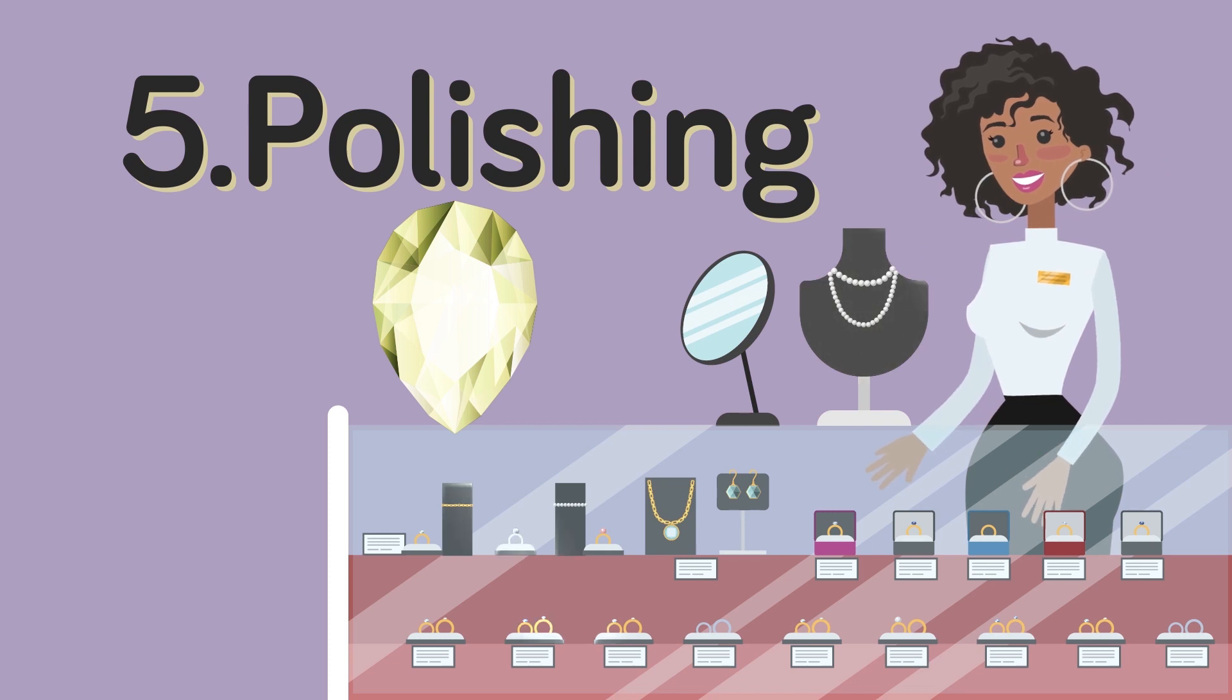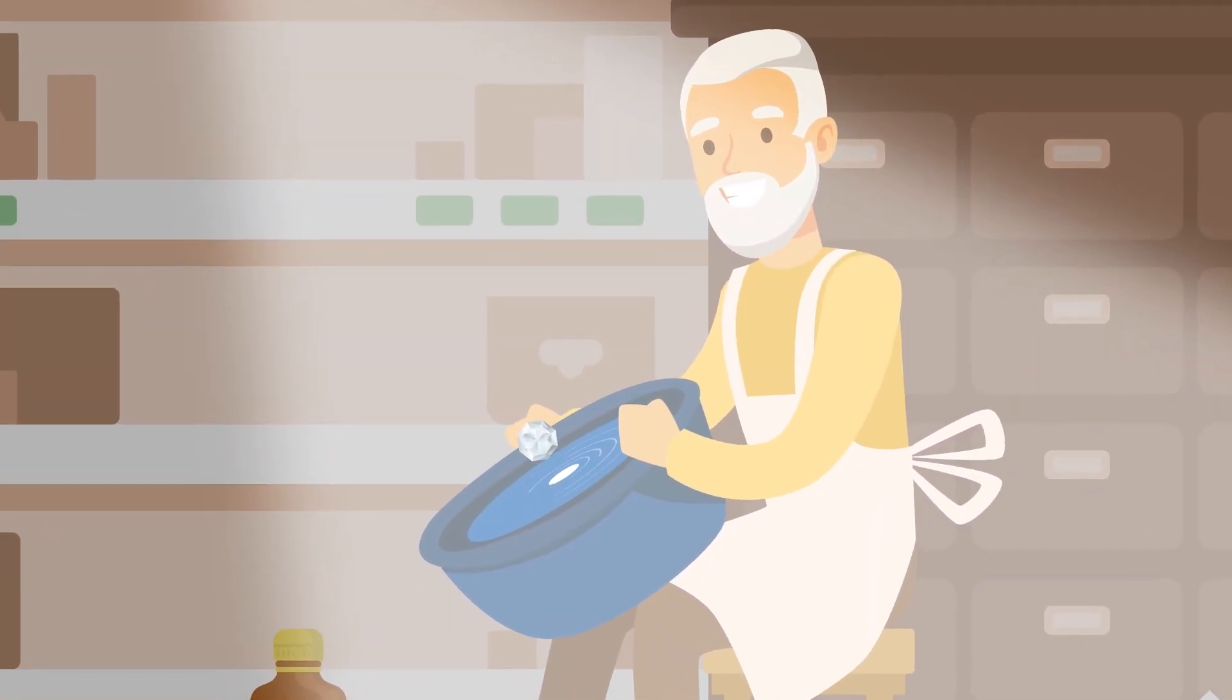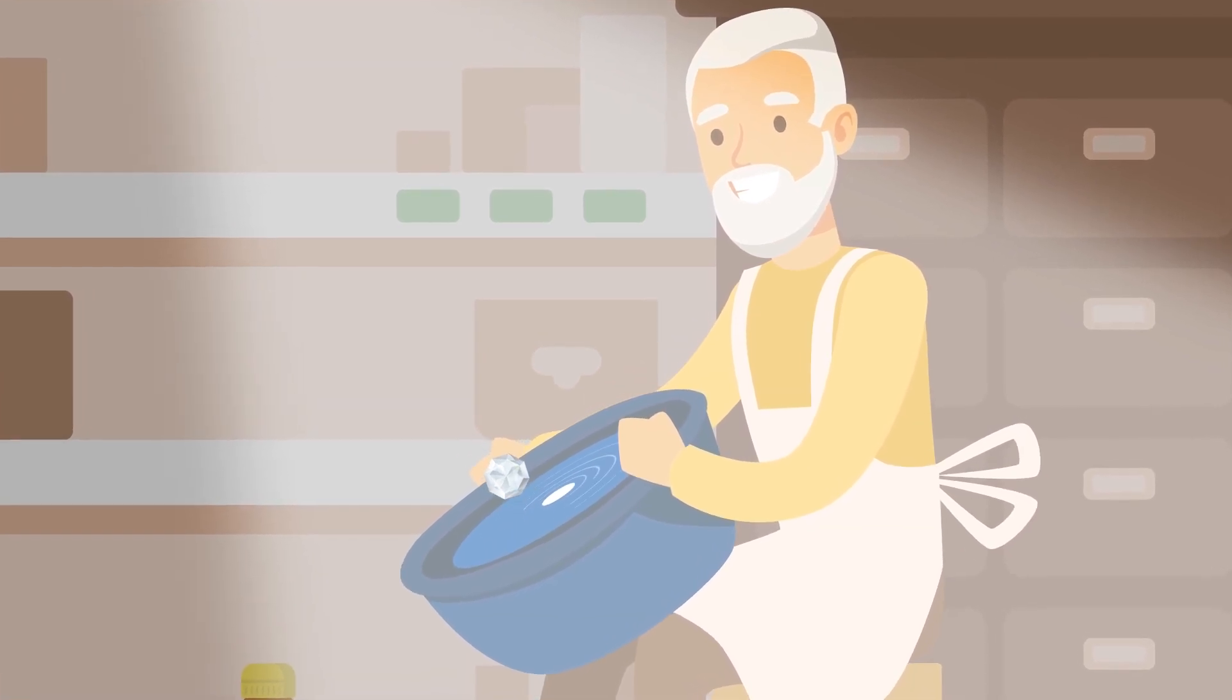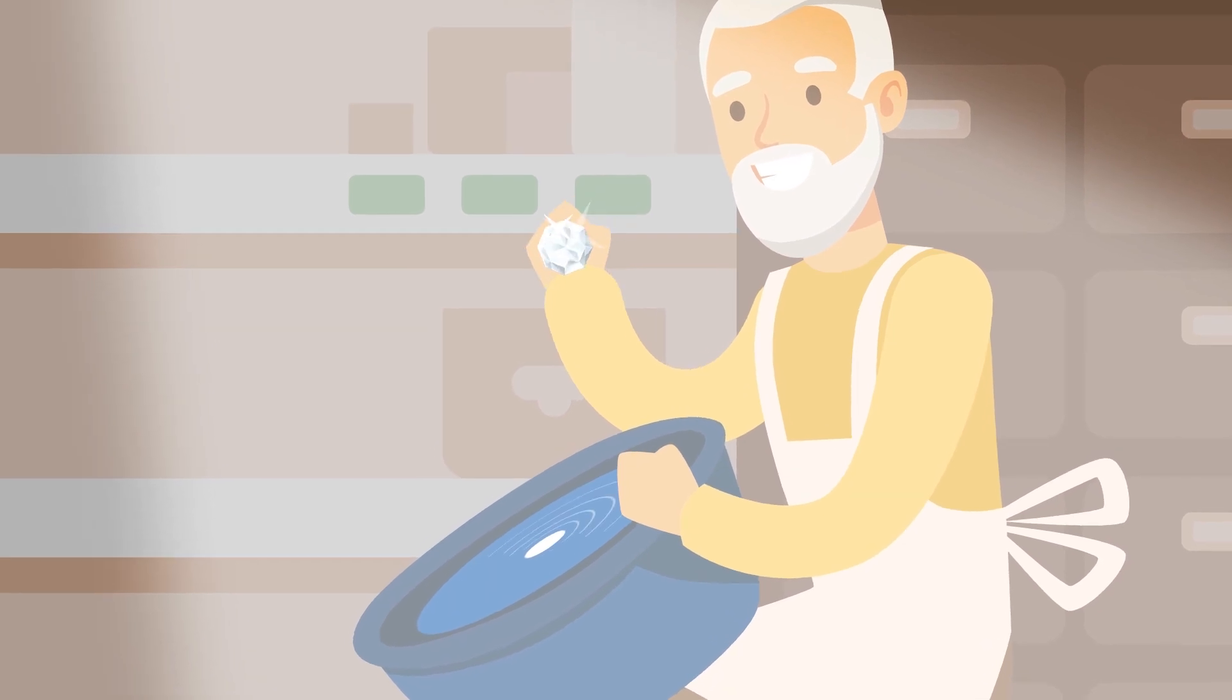5. Polishing. Finally, the diamond needs to be finished. The cutter places the diamond onto a rotating polishing wheel layered with an abrasive diamond powder that polishes the rock as it rubs up against the wheel to achieve a polished finish.